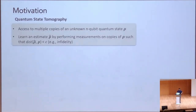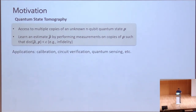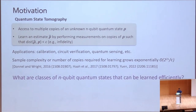The motivation mainly comes from quantum state tomography, where we have access to multiple copies of some unknown quantum state rho and the goal is to learn an estimate rho-hat by performing measurements on these copies such that the distance between rho-hat and rho is small under some distance metric, for instance infidelity. This has natural applications in calibration, circuit verification, or quantum sensing. But what makes this difficult is that the sample complexity grows exponentially with the number of qubits, which begs the question: are there classes of n-qubit quantum states that can be learned efficiently, perhaps with polynomial sample complexity?